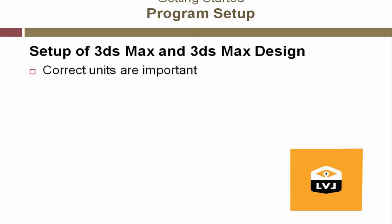We will change the units so that we're all working with the same units. Units are important for any collaboration — whether you're working within a company or between two companies — using the same units and building to the same scale will eliminate confusion and possible scale problems when working with different models from different locations. A second very important reason to use consistent units is that objects need to be built to real-world scale. 3ds Max bases its lighting on real-world size, meaning that objects at different scales will not be illuminated the same way by a single light.